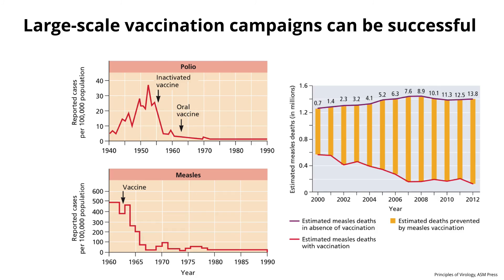Vaccines given in large global campaigns have been very successful at preventing infections. On the upper left, the incidence of poliomyelitis in the U.S. — 20,000 to 30,000 paralytic cases a year — eradicated from most of the world today by the use of two different vaccines: an inactivated and an oral vaccine. Measles on the bottom — many cases of measles in the U.S. associated with deaths — has been almost eliminated in the U.S. But again, measles vaccine is one of the vaccines targeted by anti-vaccine lunatics, so they don't immunize their kids, and measles continues to spread.